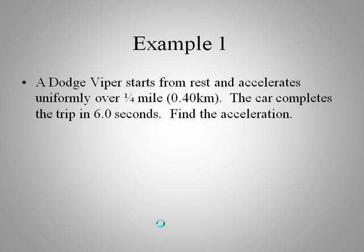Let's try an example. So we have a Dodge Viper. Starts from rest. That means it's initially at zero velocity. And accelerates over a quarter mile, about four tenths of a kilometer. It takes six seconds. So we need to find the acceleration.